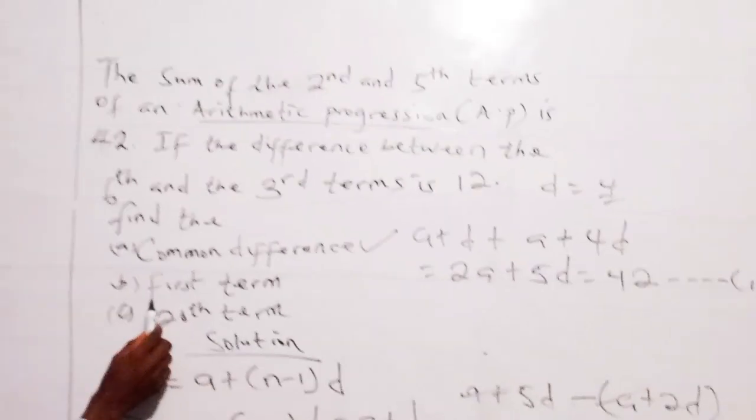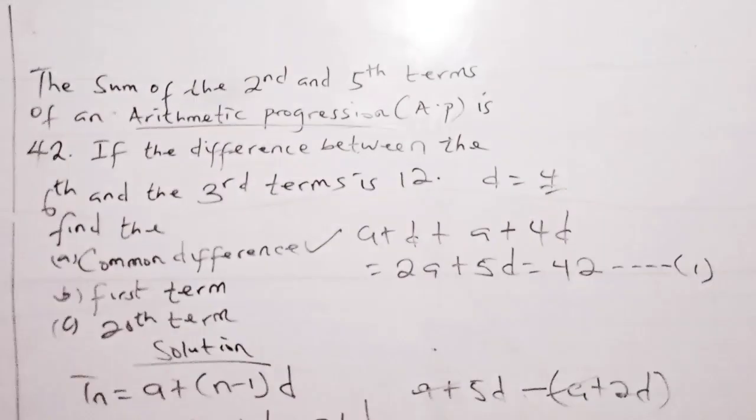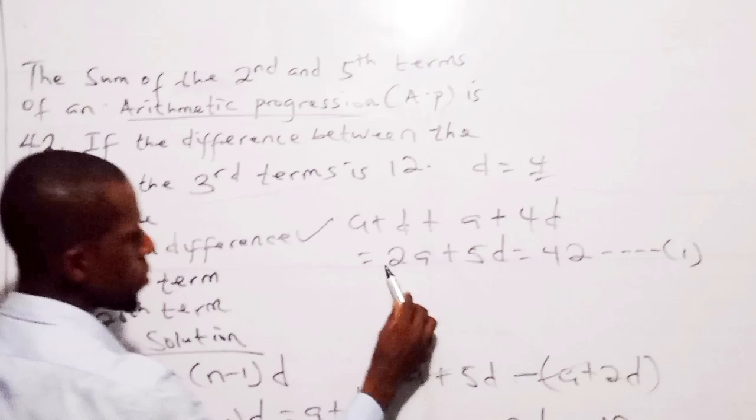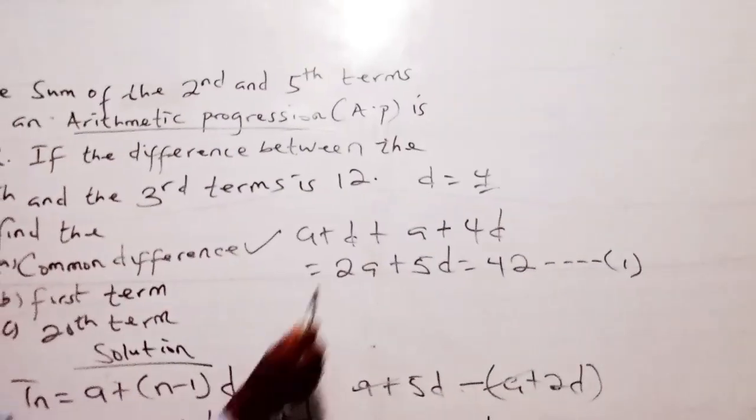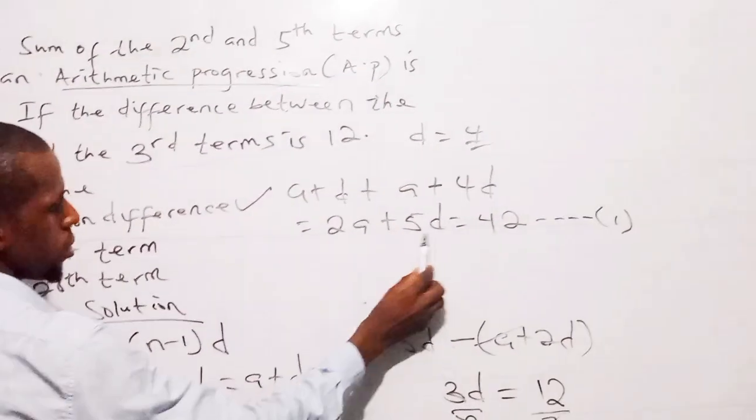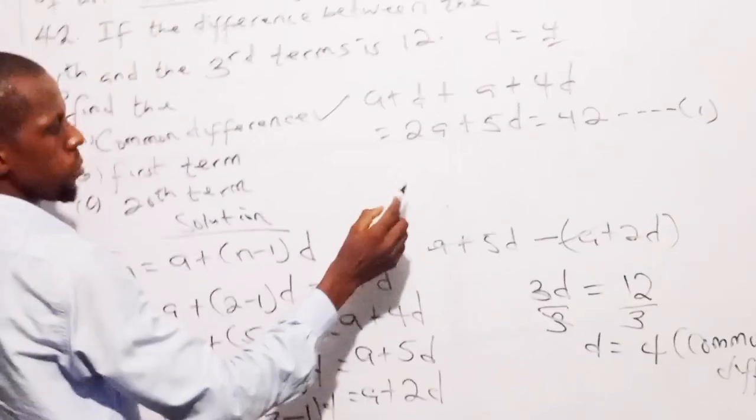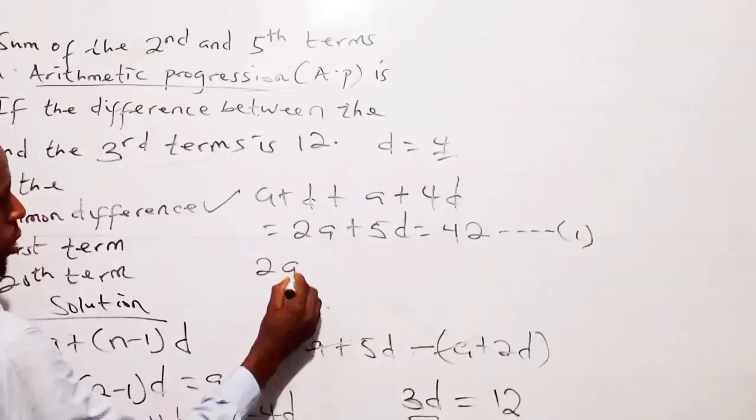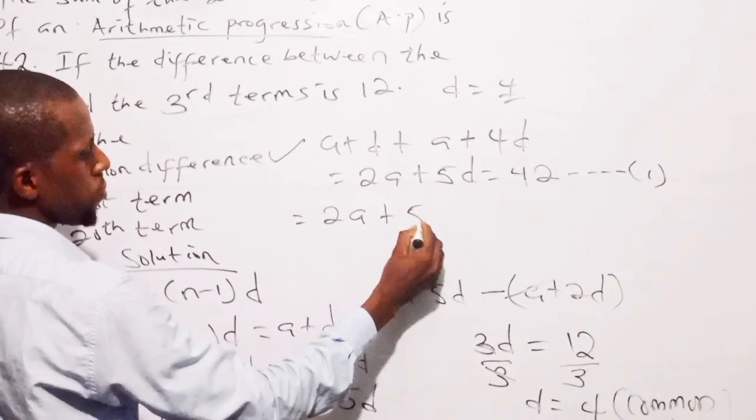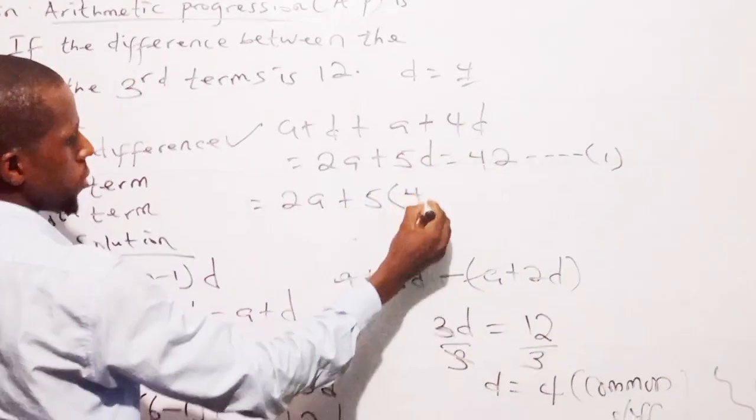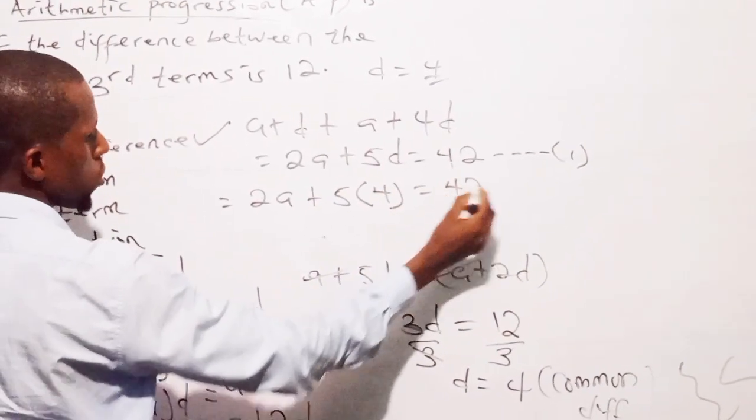So to get the first term, we'll come back to this equation and substitute what is D now for 4 in this equation to arrive to our first term. So to do that, we say 2A plus 5 into 4, the common difference, equals to 42.